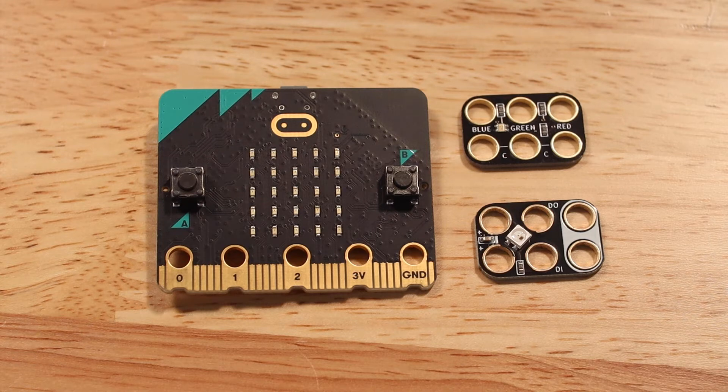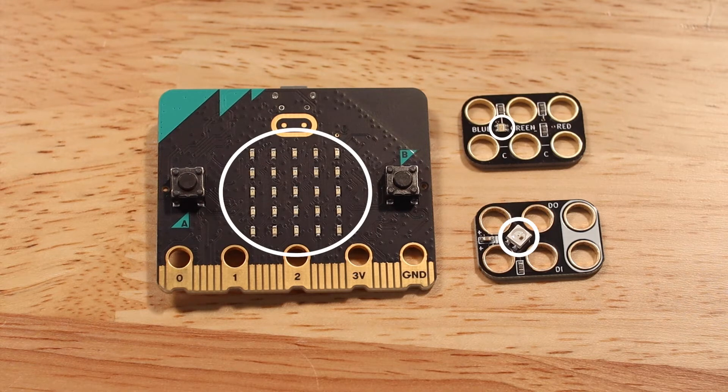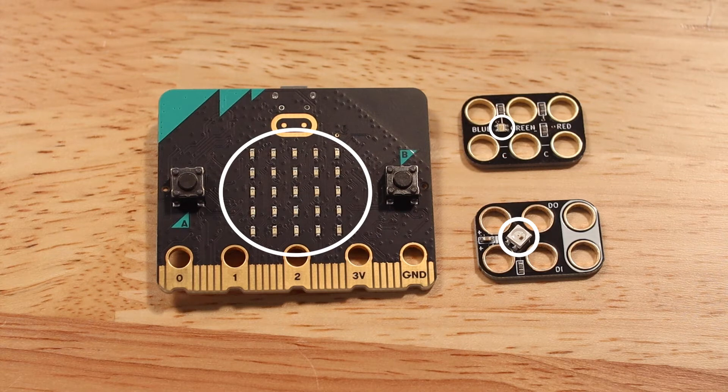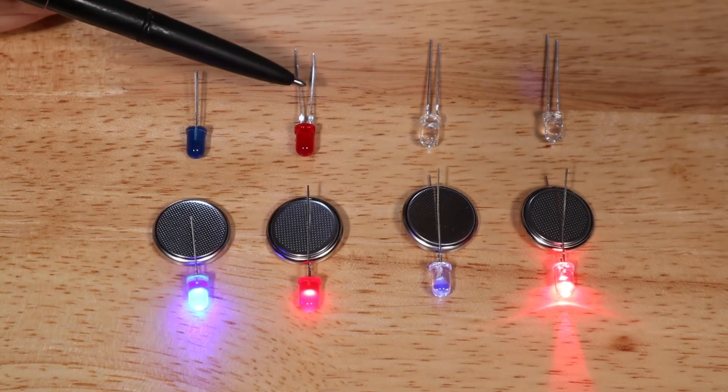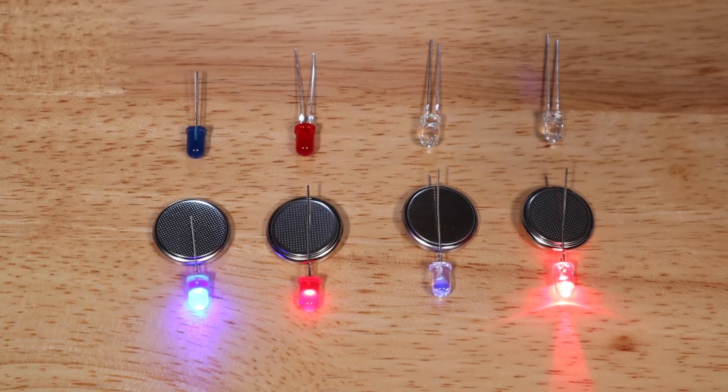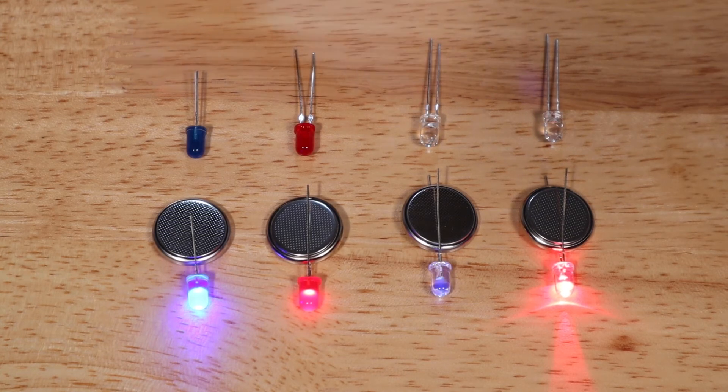Other LEDs are designed with metal pads instead of legs. These pads are soldered directly to a circuit board, allowing them to be much smaller. Some LEDs have a colored package, while other LEDs emit different colors of light, but the package is clear or white appearing.